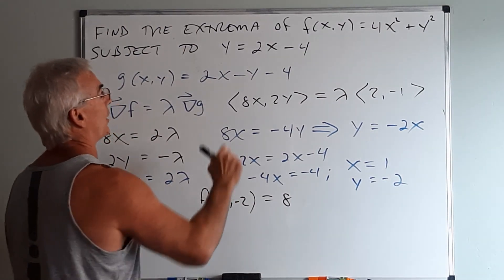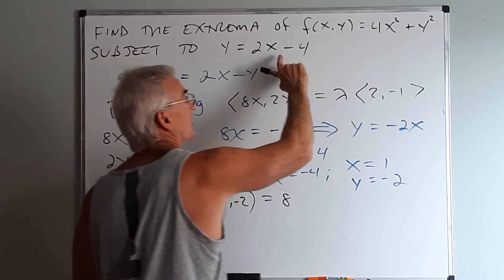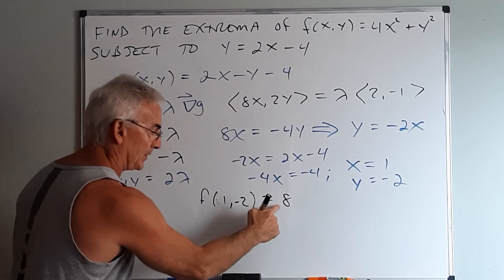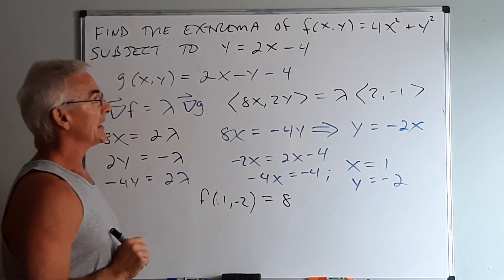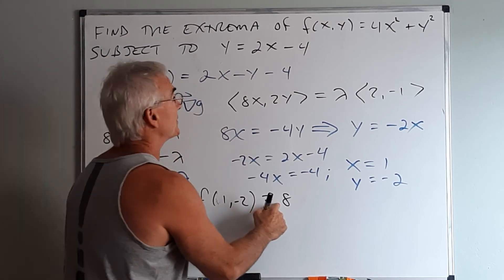I choose any other point that satisfies the constraint. Substitute that point into this function. If the value is bigger than this, then this would be the minimum. If the value is smaller than this, then this would be the maximum. So let's take something simple.